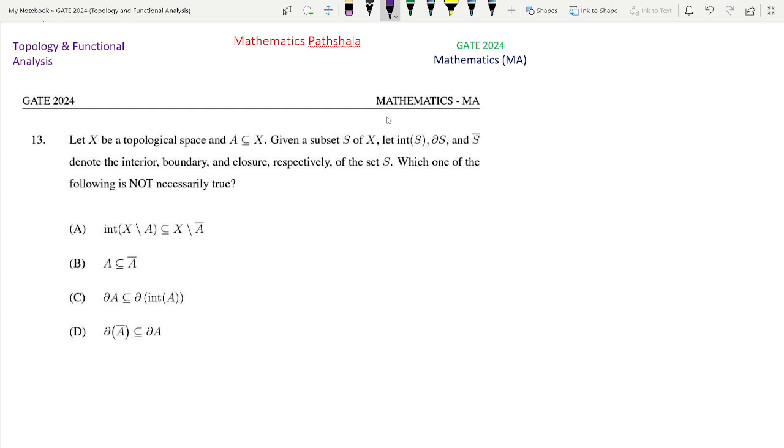To solve this question, first we read the question. Let X be a topological space and a subset of X. Given a subset S, let int S, del S and S bar denote the interior, boundary and closure respectively of the set S. Which of the following is not necessarily true?